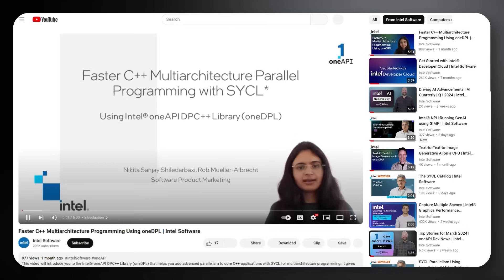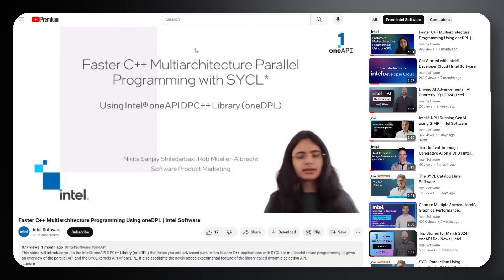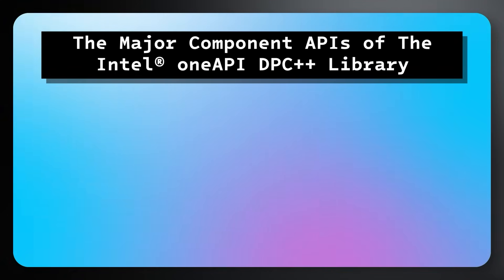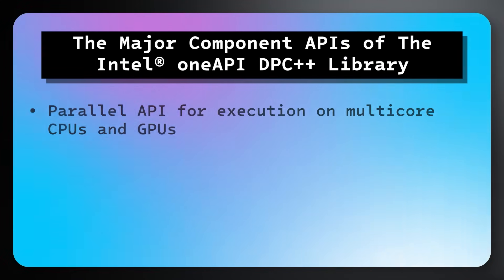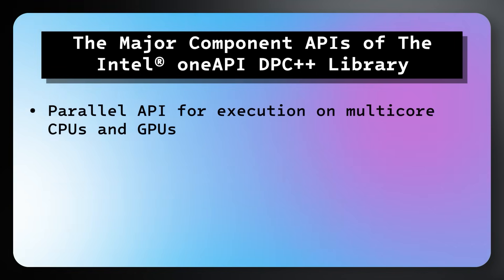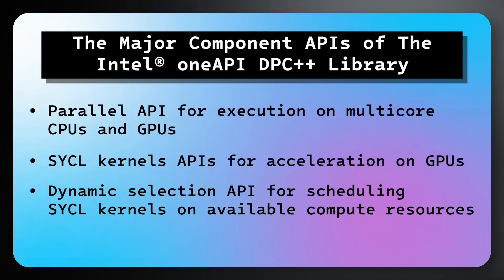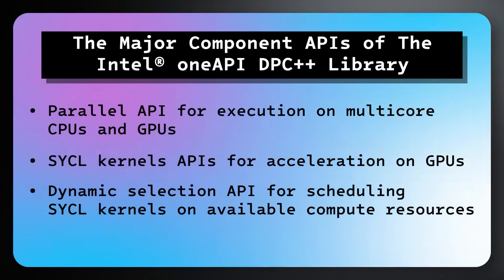And for our final story, watch the Faster C++ Multi-Architecture Programming using OneDPL video. This video introduces the Intel OneAPI DPC++ library, also known as OneDPL, that helps you add advanced parallelism to core C++ applications with SYCL for multi-architecture programming. The video goes into detail about the major component APIs of the library: Parallel API for execution on multi-core CPUs and GPUs, SYCL Kernels APIs for acceleration on GPUs, and Dynamic Selection API for scheduling SYCL kernels on available compute resources.